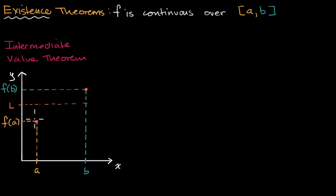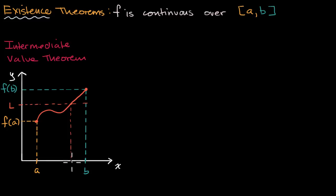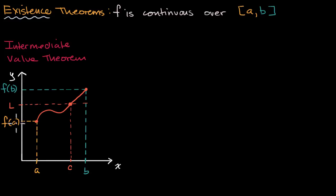So it's pretty intuitive that if you're continuous, there exists a c between a and b — including possibly a or b — that takes on any of those values, in this case the particular value that sits between f(a) and f(b). That's the first existence theorem.